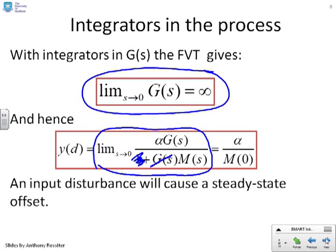And therefore, I can cross both Gs. And what I get left with is alpha over M of 0. So the input disturbance will still give you a steady-state offset. And that's an interesting observation. You can have an integrator in the process. But if you have an input disturbance, you will still get a steady-state offset.